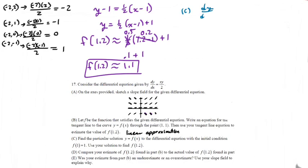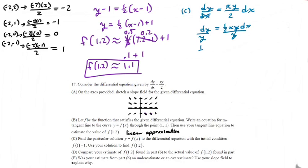We have dy/dx. We're going to put the dx over here, and rewrite this as: dy equals 1 half times x·y dx. Then divide both sides by Y. Now I have 1/Y dy equals 1 half x dx.